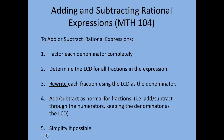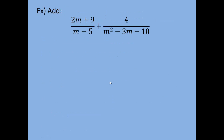Let's take a look at an example. For this first one, we want to add (2m + 9) over (m − 5) plus 4 over (m² − 3m − 10).